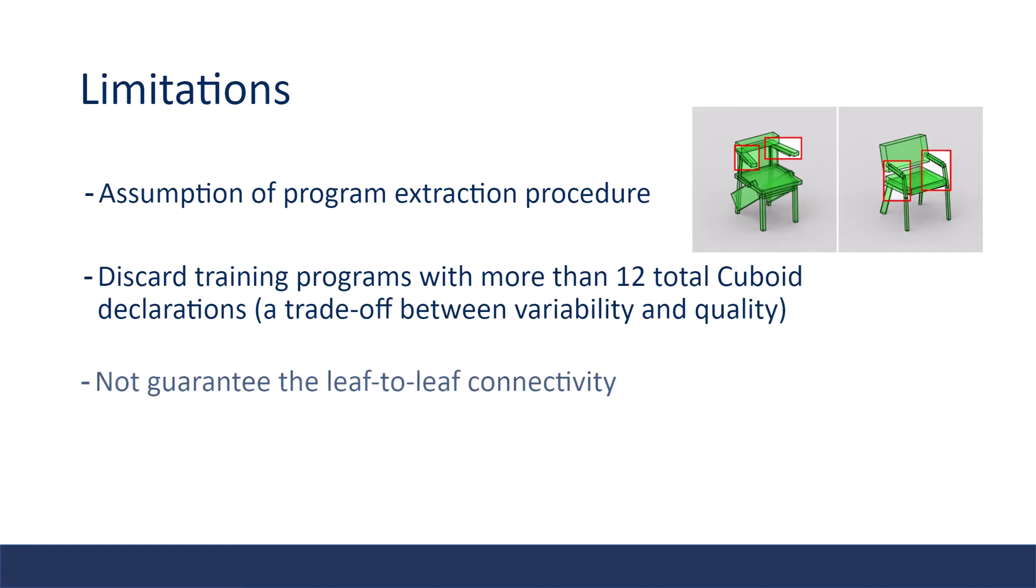Third, while Shape Assembly has a strong inductive bias for generating physically connected shapes, it is not guaranteed to do so. This is more likely to happen with very non-axis-aligned structures that result in loose bounding of cuboids. The fourth is that the program only supports cuboids. There are many shapes that cuboids cannot imitate, like in this graph.